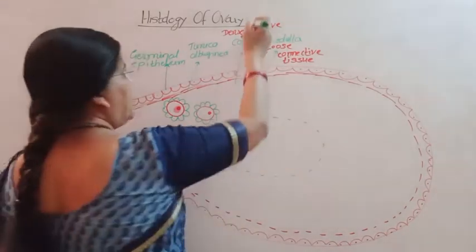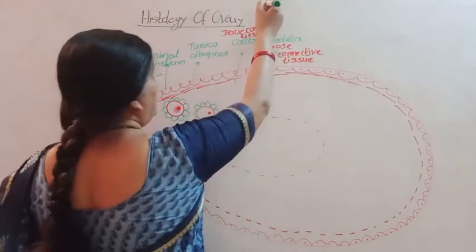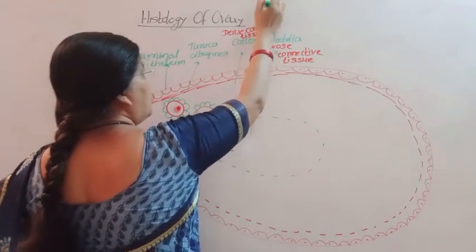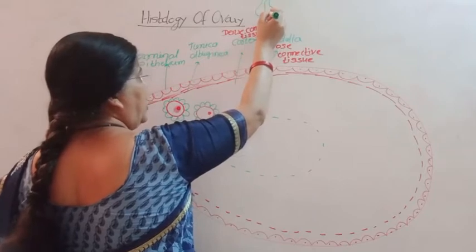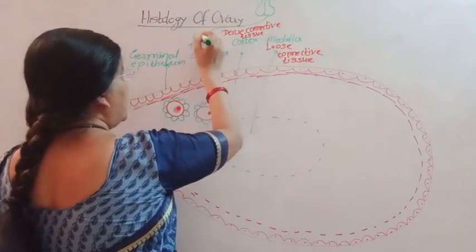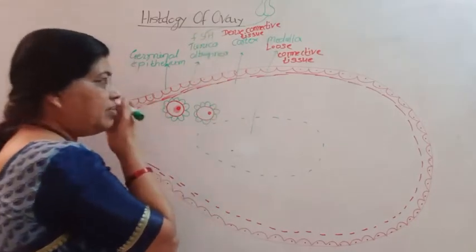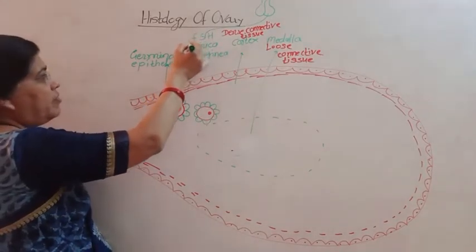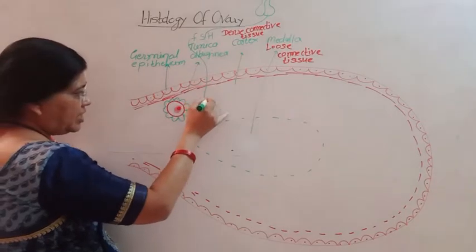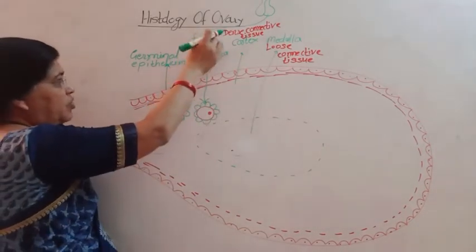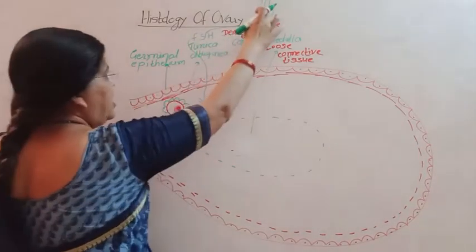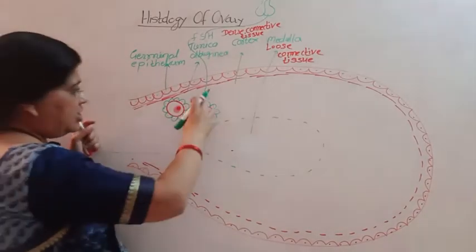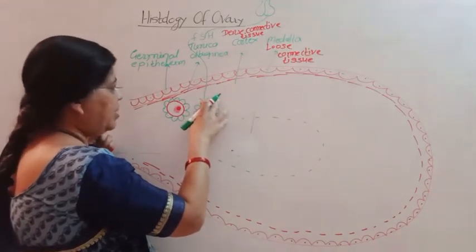The role of the pituitary is very important. The anterior lobe of the pituitary secretes FSH — follicle stimulating hormone. This FSH hormone stimulates the primordial follicle. The primordial follicle is also called the immature follicle.